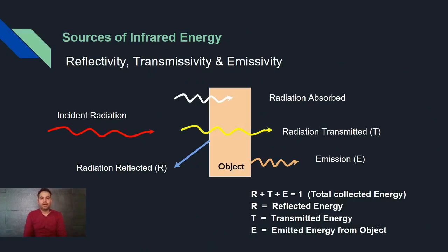What are the different sources of infrared energy? There are reflectivity, transmissivity and emissivity. If instant radiations fall on the objects, objects can absorb the energy, radiate the energy, reflect the energy, transmit the energy. We require the object with radiation properties.